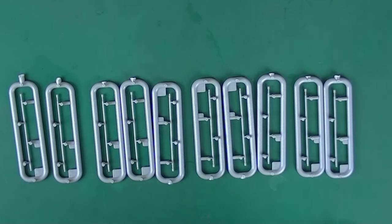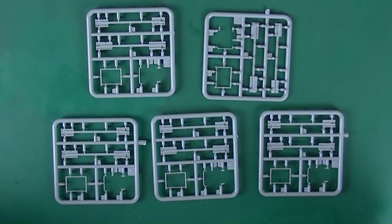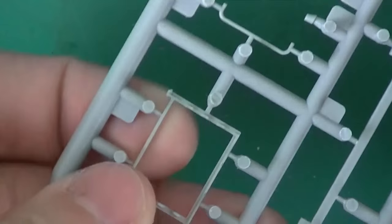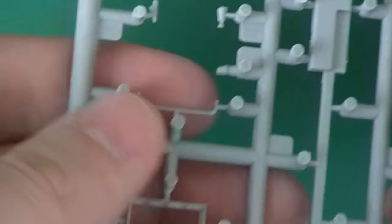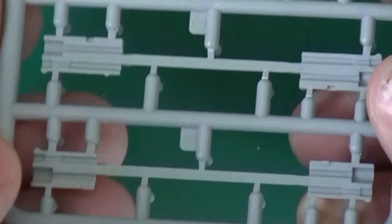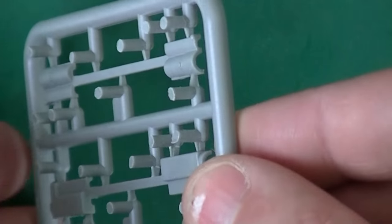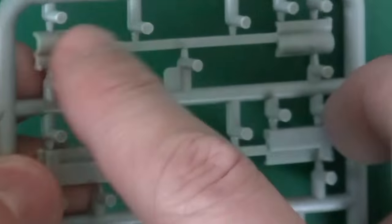Then we have ten of this sprue. And we have five of this sprue. Only a couple of parts on here. Some thin frames. Some grab handles. These look like the things you mount the torsion bars in. Lots of knockout marks and sprue gates. Looks good though.